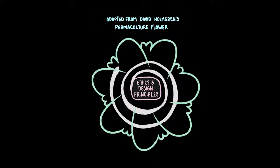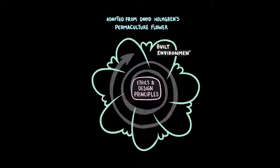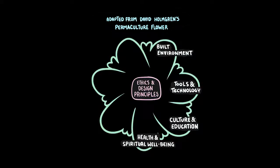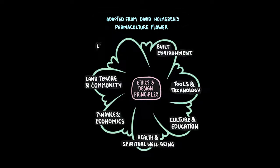The seven branches are the built environment, tools and technology, culture and education, health and spiritual well-being, finance and economics, land tenure and community, and land and nature stewardship.